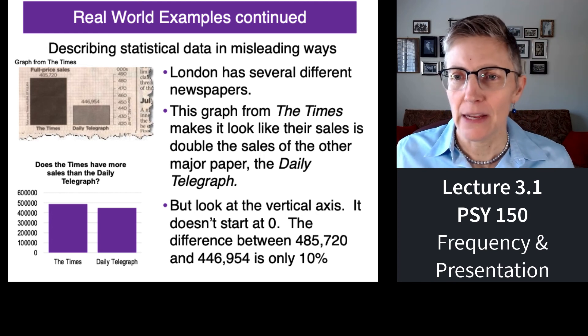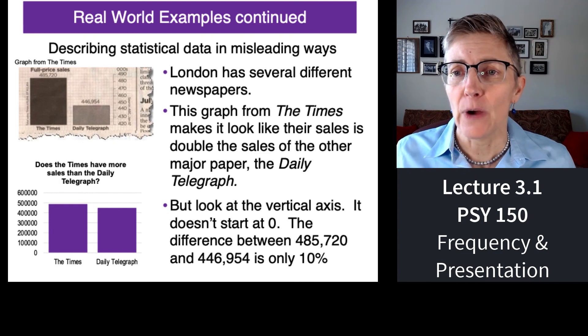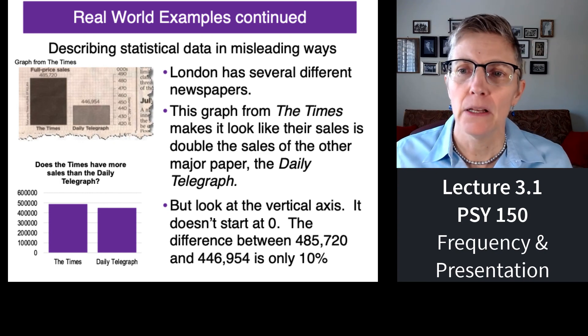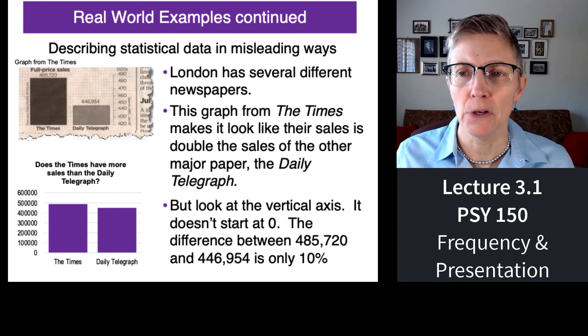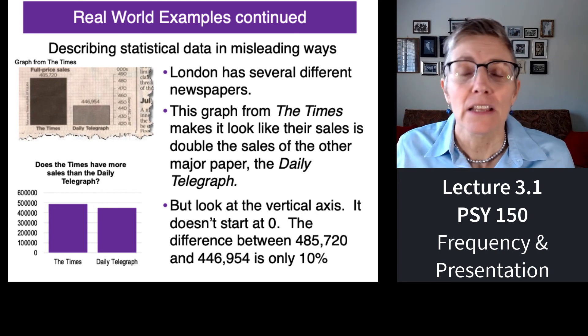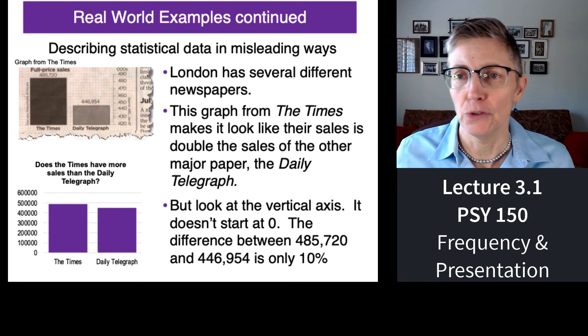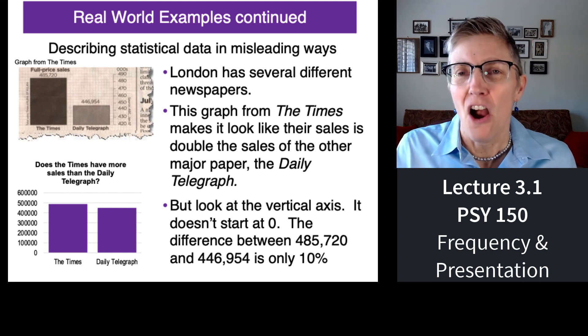One last example: from two newspaper companies in England. The graph on the top seems to imply that one newspaper has a great deal more sales than the other. But again, if you change the vertical axis, it looks like there's very little difference between the sales of these two newspapers. These examples hearken back to that Mark Twain quote we started with — there are three kinds of lies: lies, damned lies, and statistics. Okay, that's it for this segment. We'll come back later and talk about measures of central tendency.